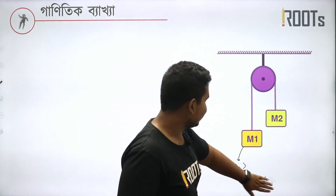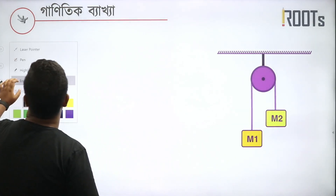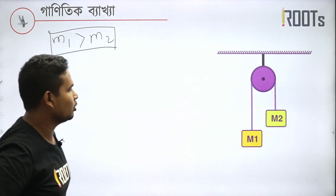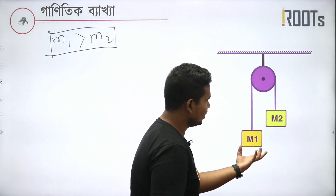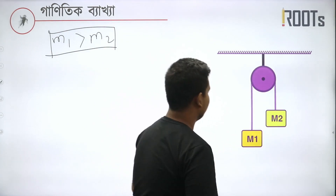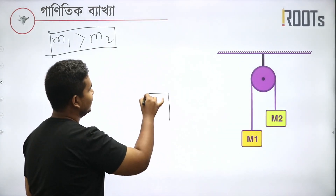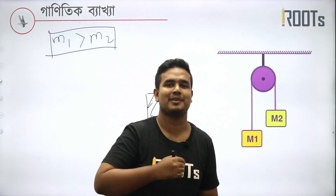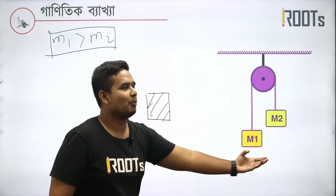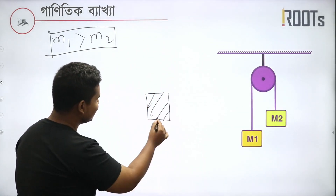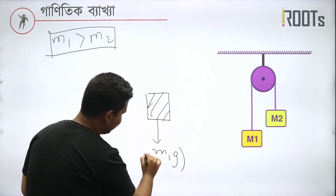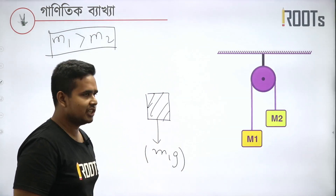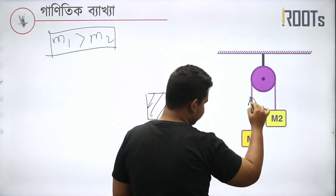Let's write this on the slide. The first thing is M1 and M2. Mass 1 — let's draw the free body diagram and make it clear to see what happens. The weight of M1 is M1G, mass is M1, and M1G. But at the same time on the top, there is a tension force.